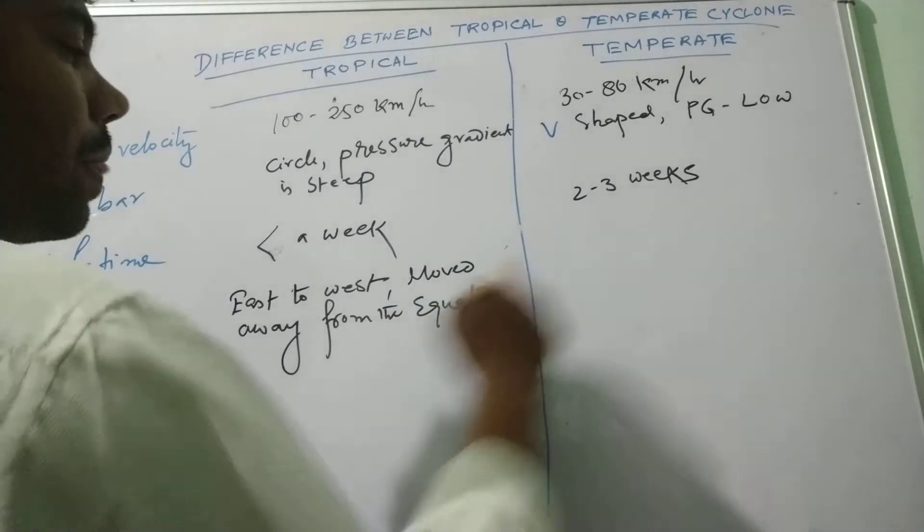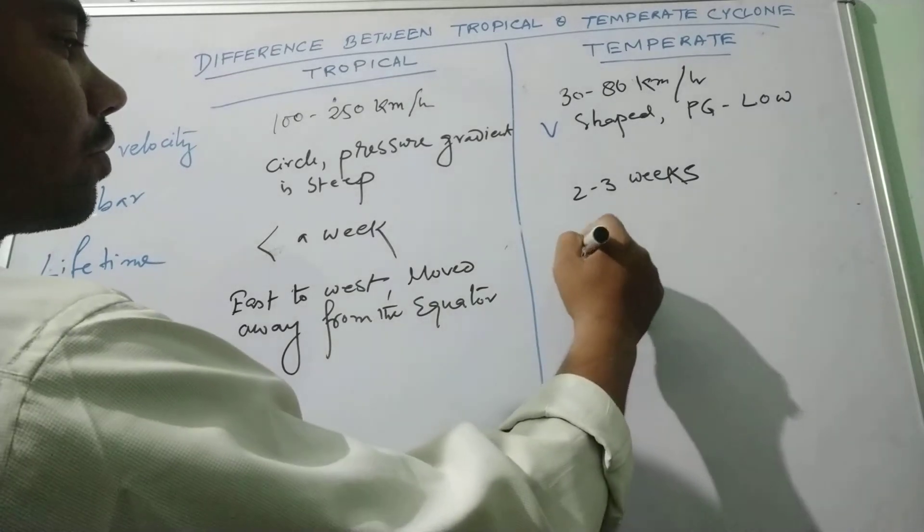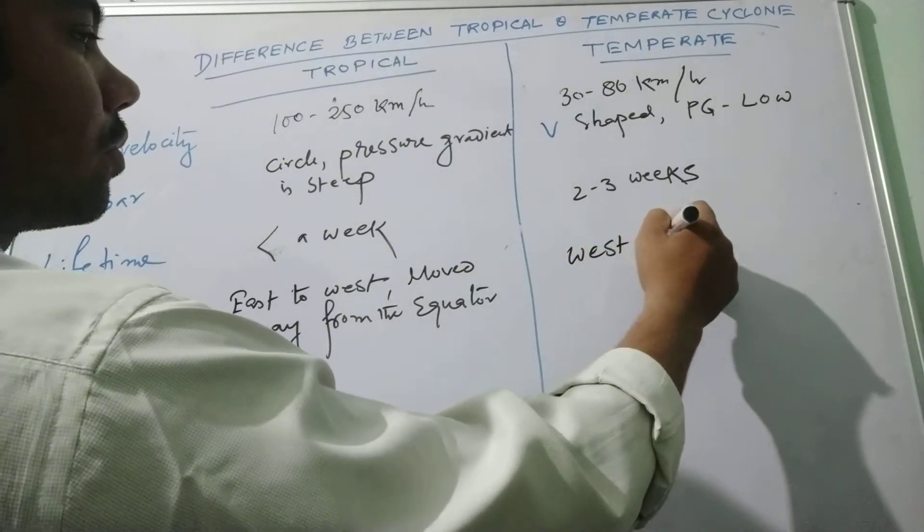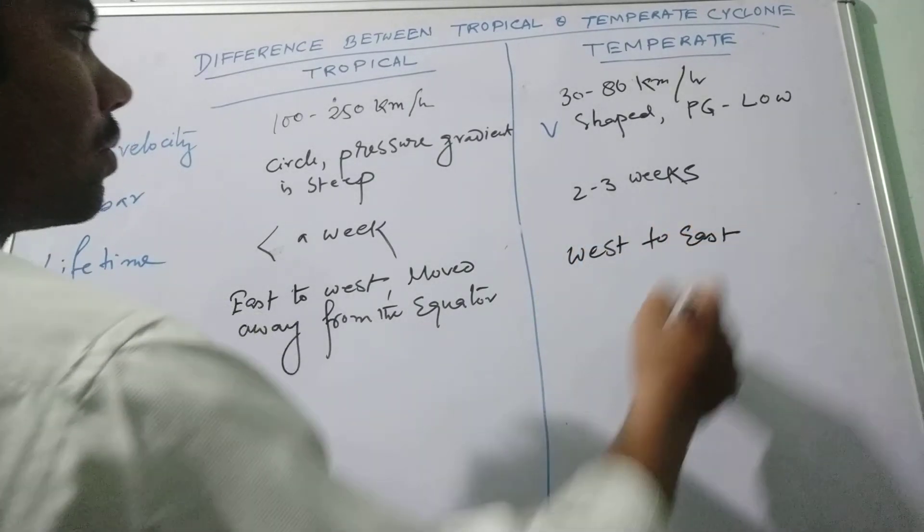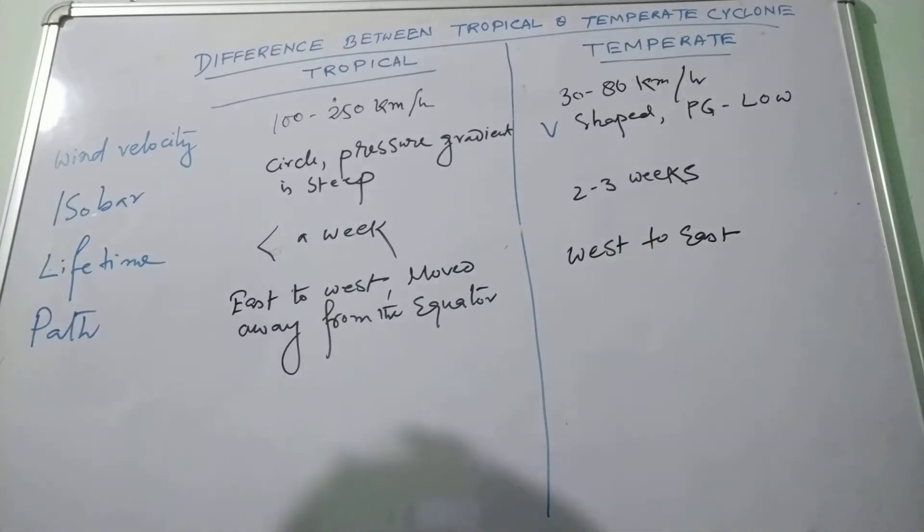Temperate cyclone moves from west to east and is found in the temperate region.